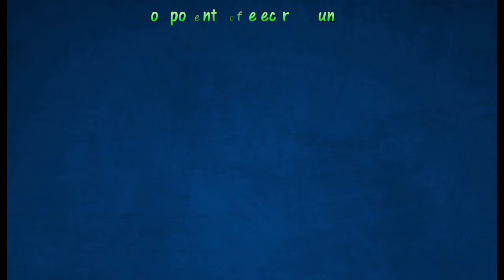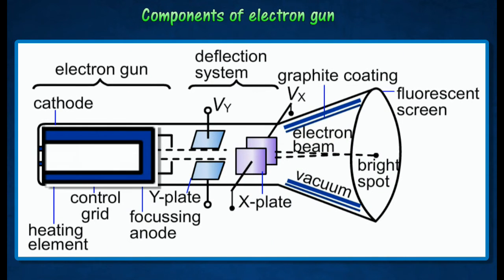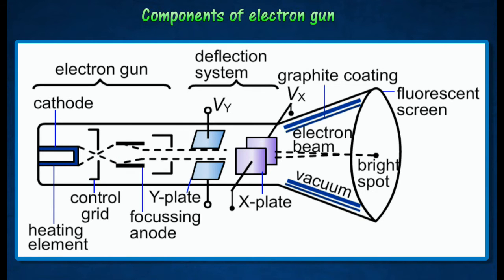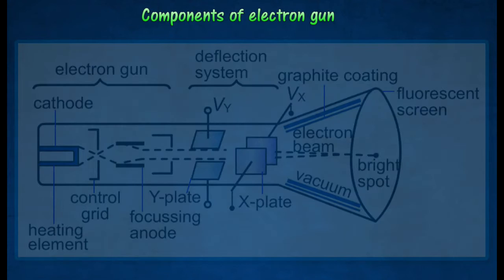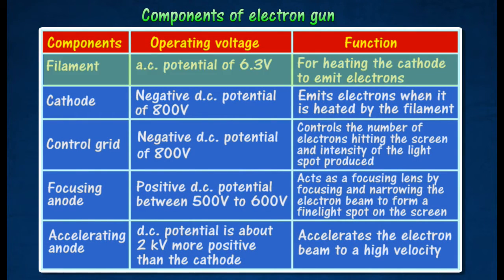The electron gun has many different components such as filament, cathode, control grid, focusing anode, and accelerating anode. The filament is heated when current flows through it. It is used to heat up the cathode. The cathode produces a highly concentrated electron beam.